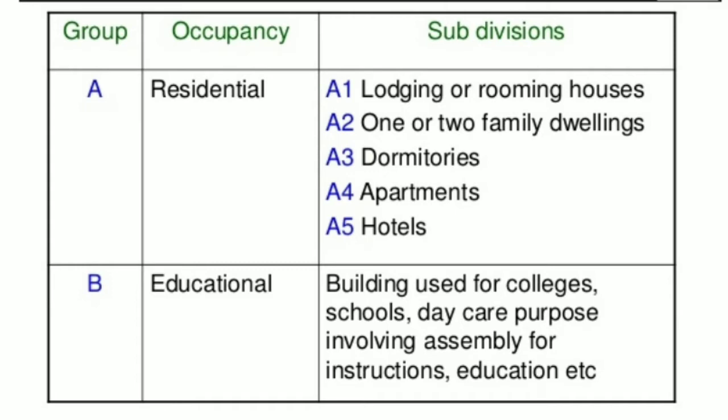Residential buildings fall under Group A, with subdivisions: A1 is Lodging or Rooming Houses, A2 is One or Two Family Dwellings, A3 is Dormitories, A4 is Apartments, and A5 is Hotels.